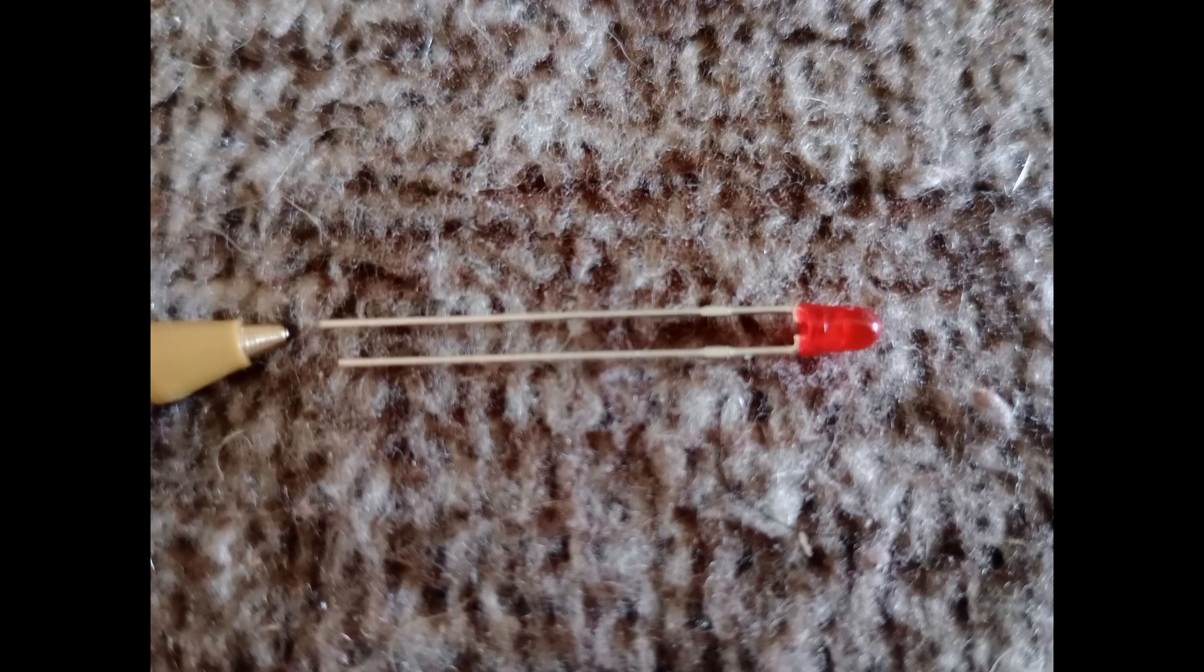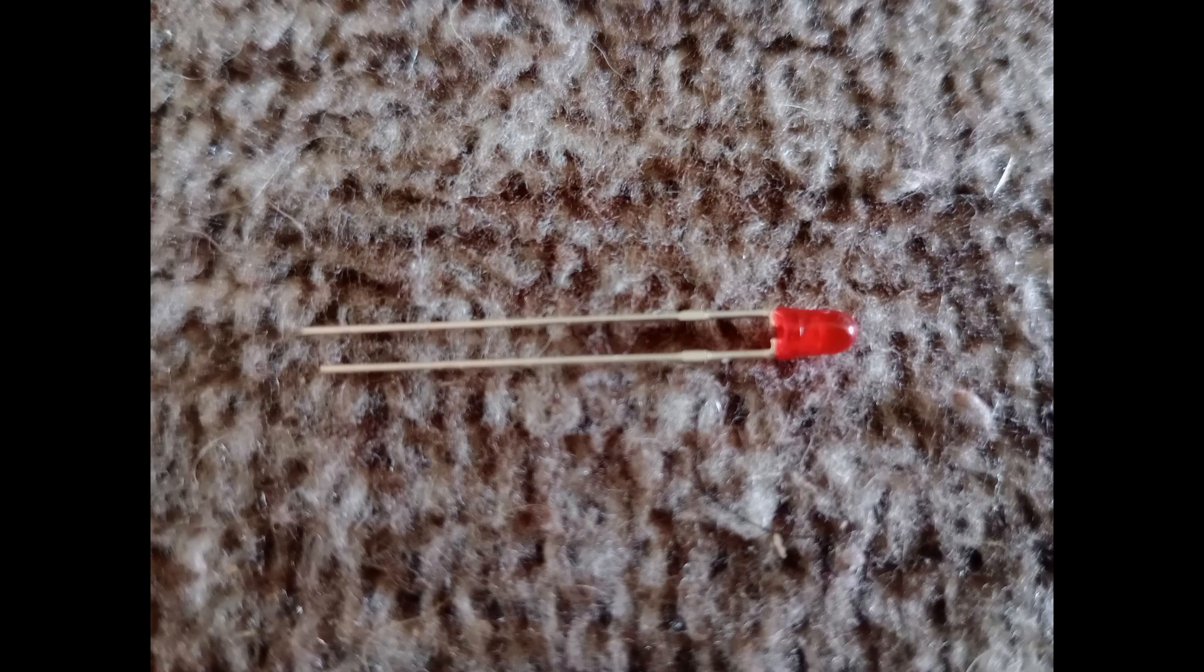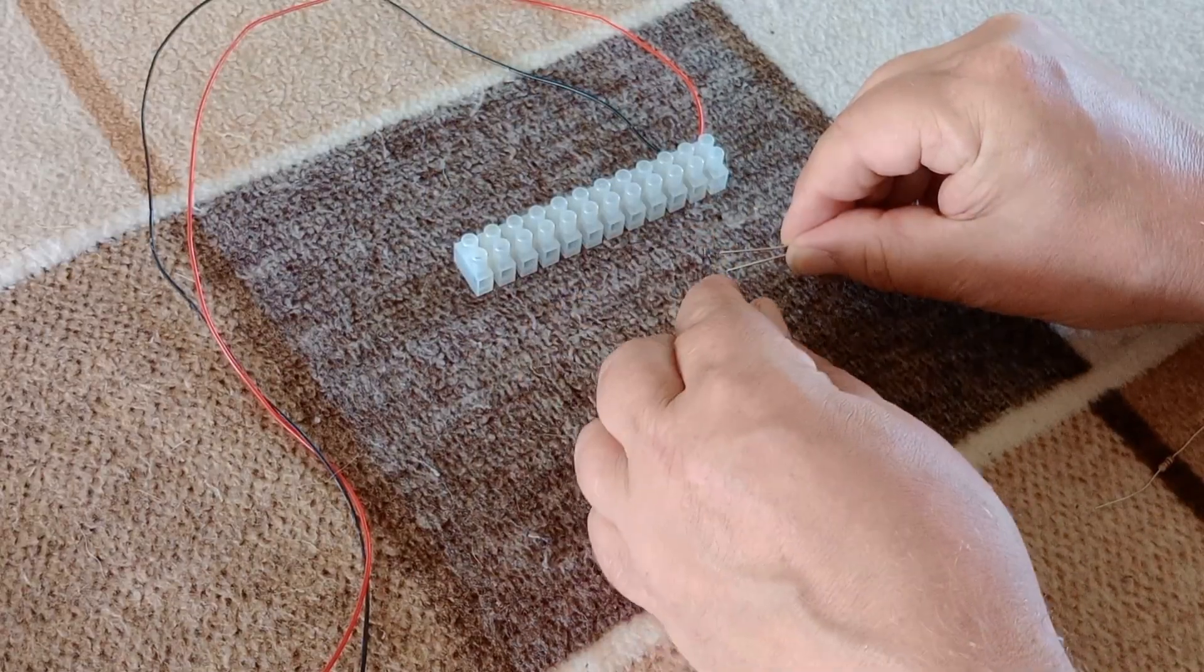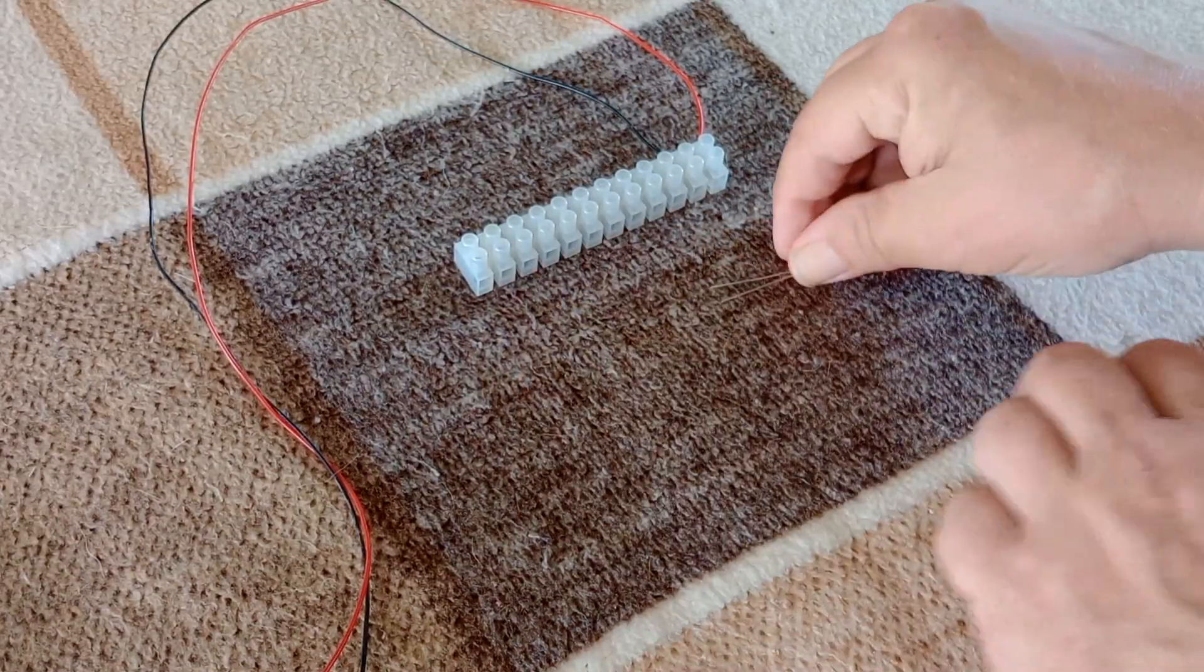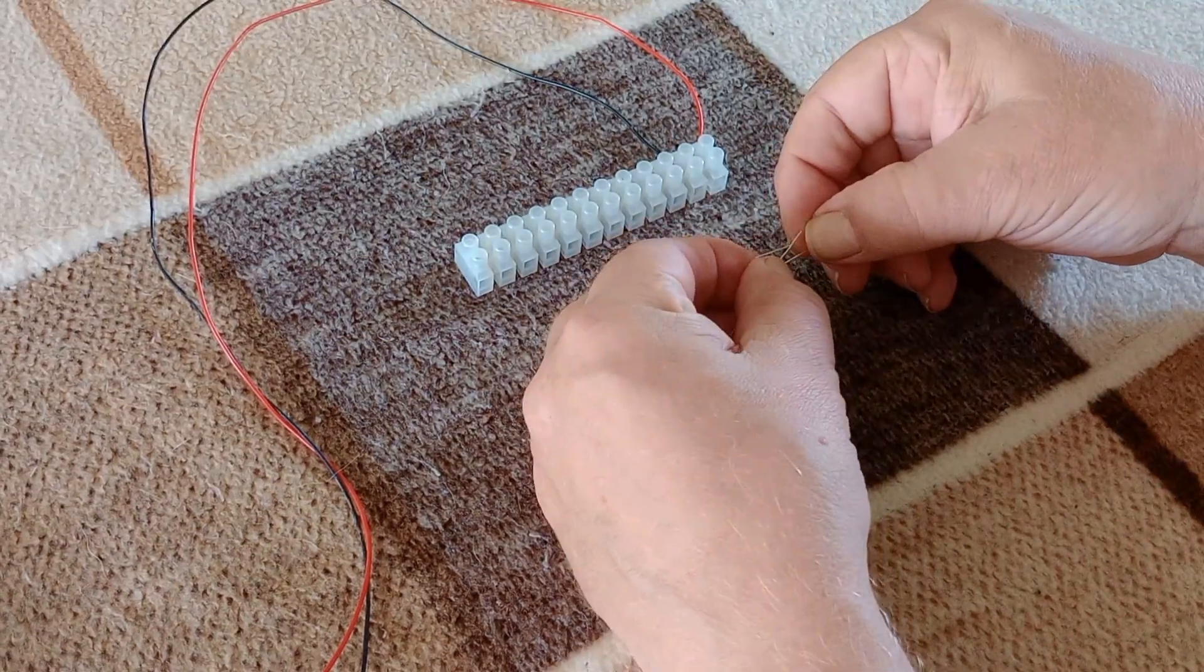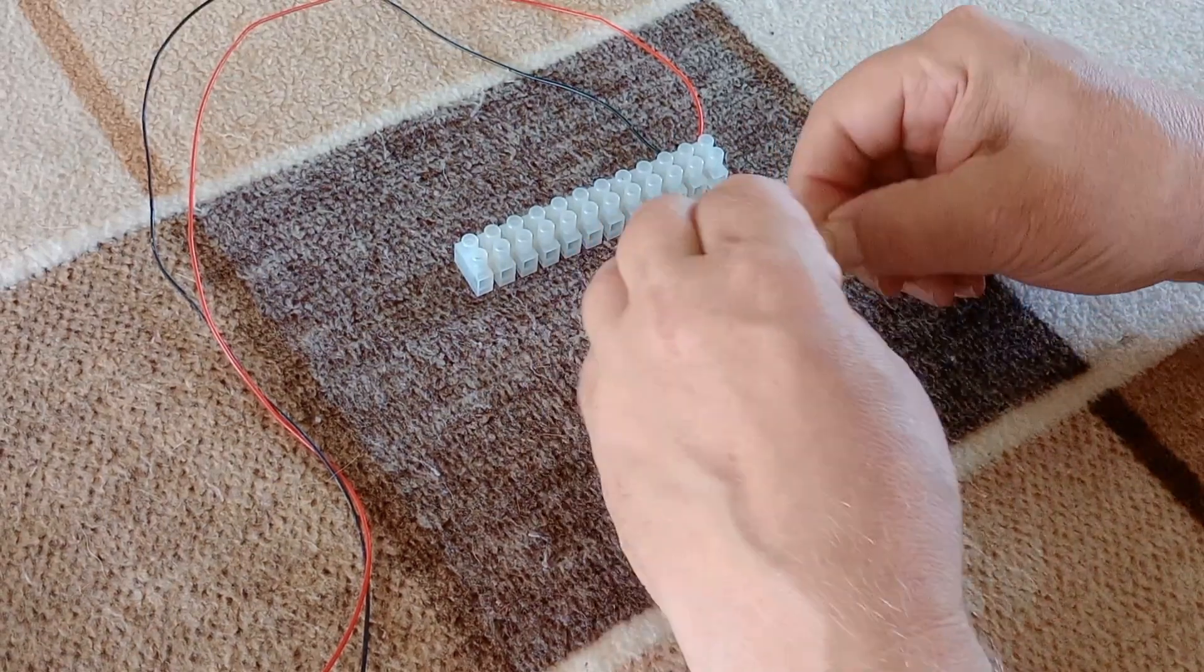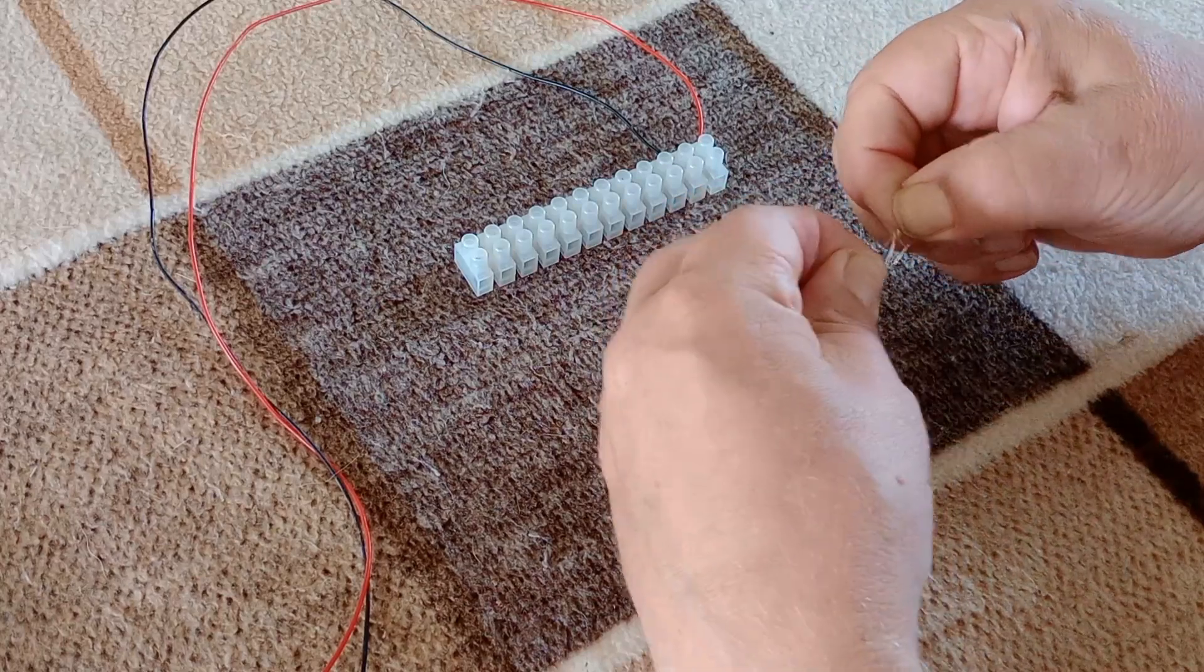LEDs have a long leg and a short leg. The long leg goes to positive, the short leg to negative. So that the LED doesn't blow up, it needs a resistor. This limits the current through the LED.